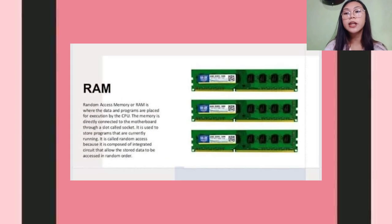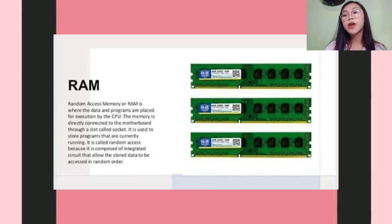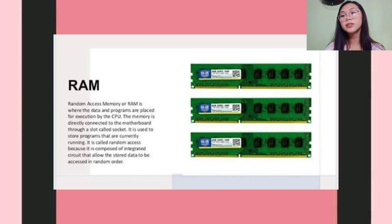Our topic for today is about system components. Number 1 is Random Access Memory, or RAM, which is where the data and programs are placed for execution by the CPU. The memory is directly connected to the motherboard through a slot called a socket, and it is used to store programs that are currently running. It is called Random Access because it is composed of integrated circuits that allow the stored data to be accessed in random order.